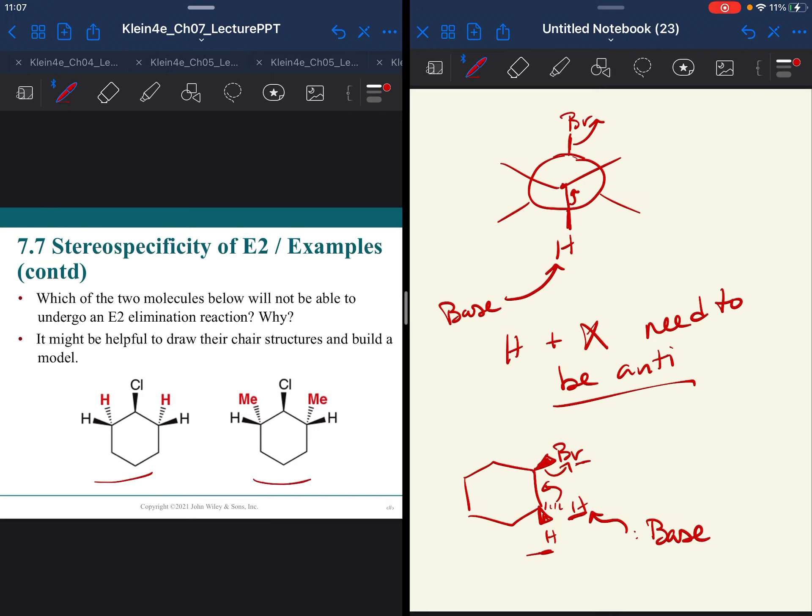So both of these molecules, they're not even isomers. One has methyl groups, one doesn't. One of these can go through elimination through an E2 mechanism and one of them can't. This one has two options of protons that can leave and kick off chlorine. This one on the right does not.